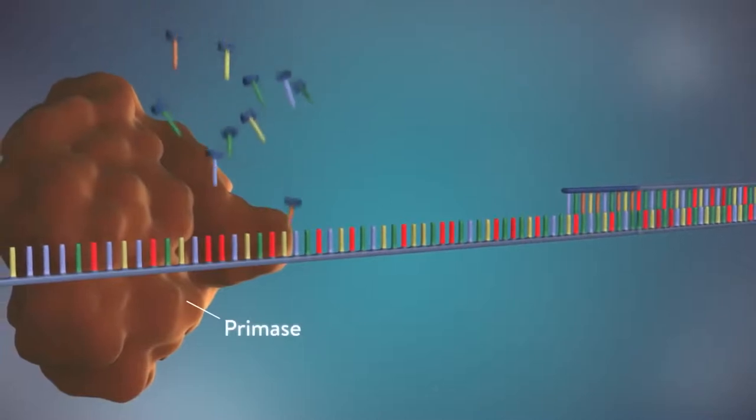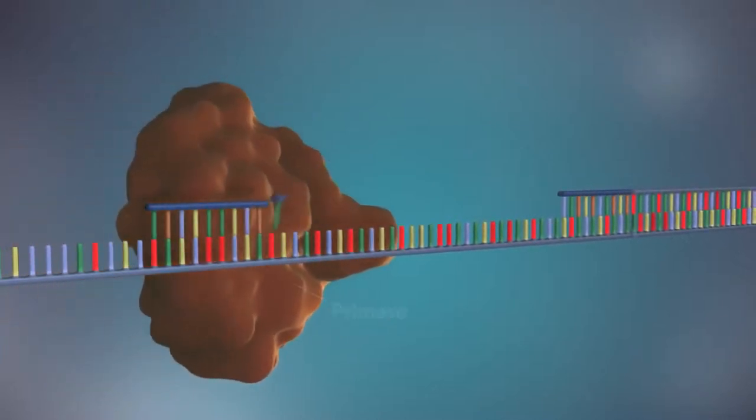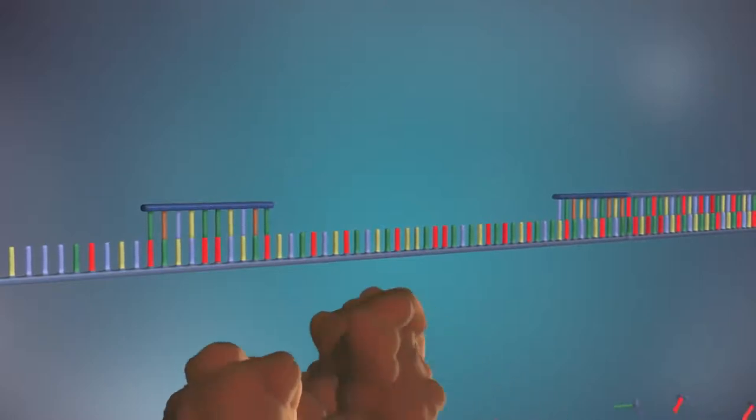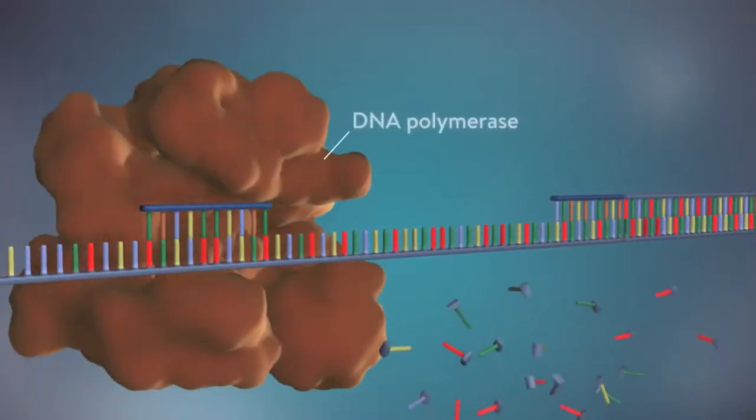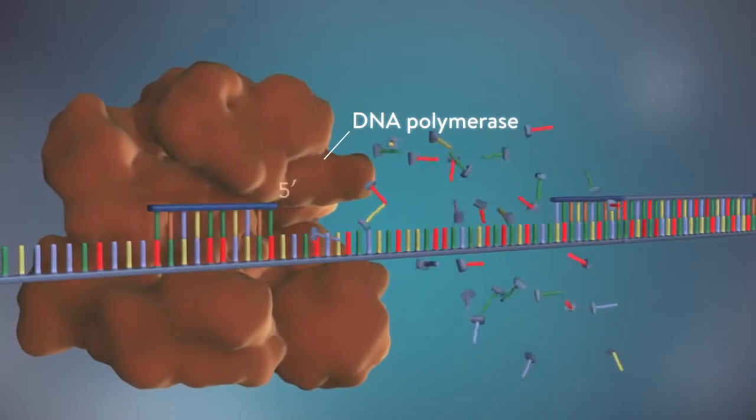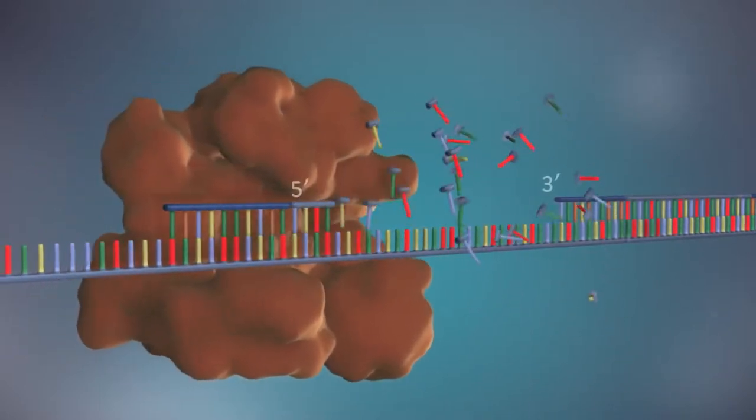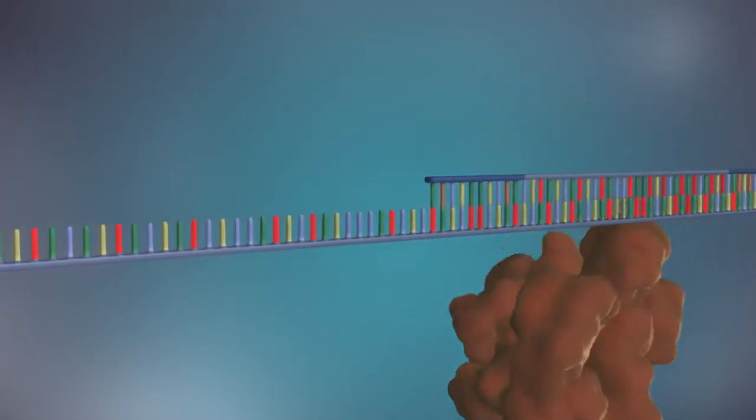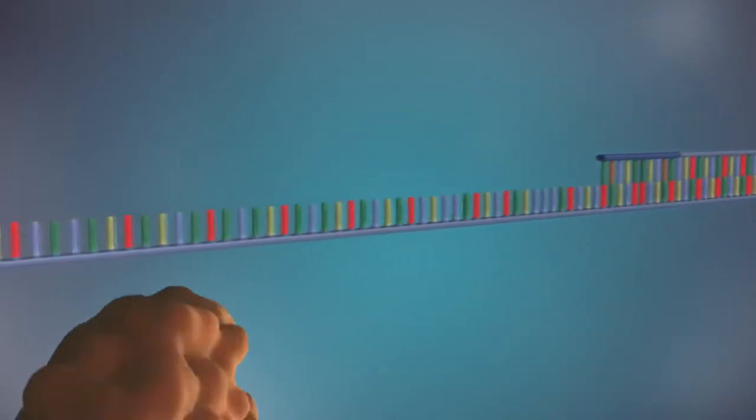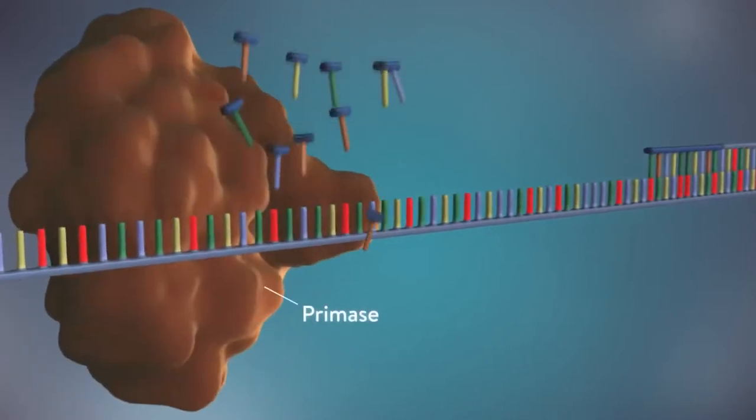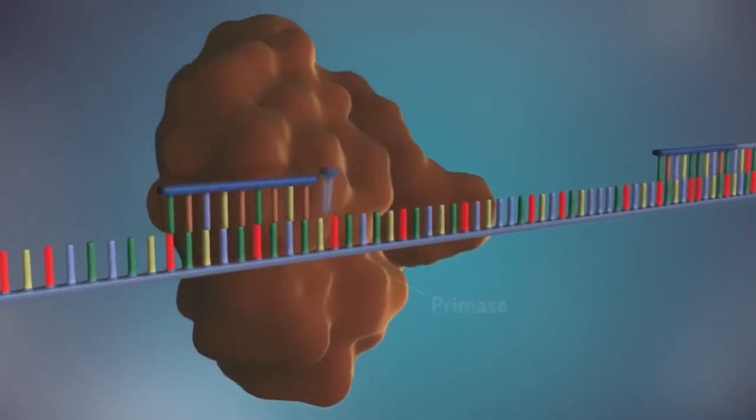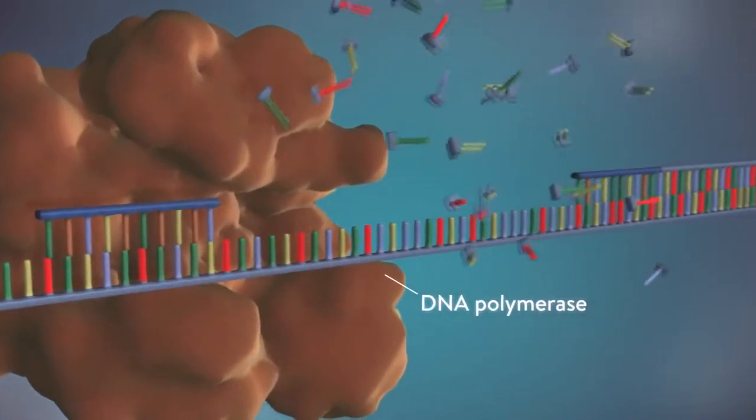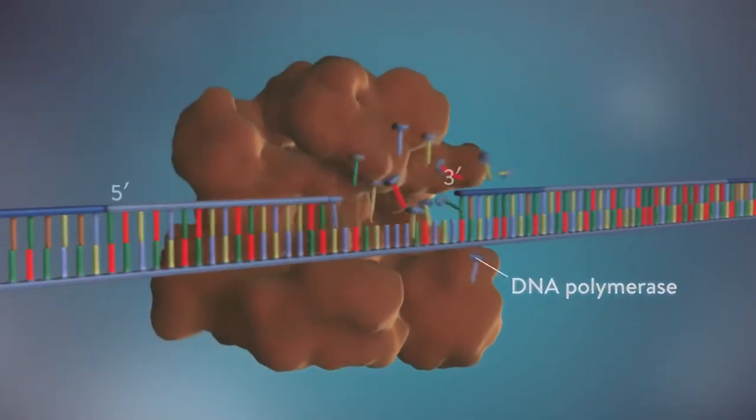Each fragment is started with an RNA primer. DNA polymerase then adds a short row of DNA bases in the five prime to three prime direction. The next primer is then added further down the lagging strand. Another Okazaki fragment is then made and the process is repeated again.